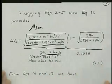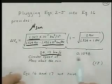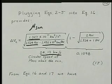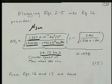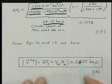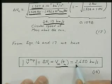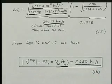This value, 24.13 kilometers per second, is the circular speed of Mars about the Sun, multiplied by 0.1098. And we get that the V infinity at arrival at Mars is 2.650 kilometers per second.